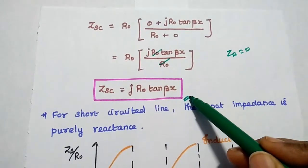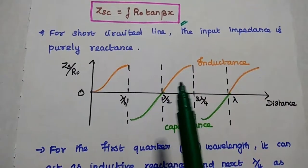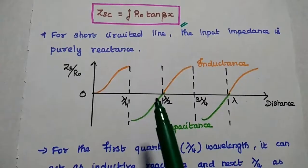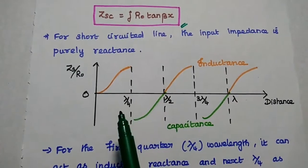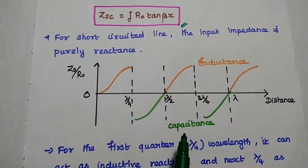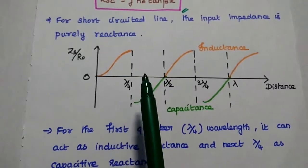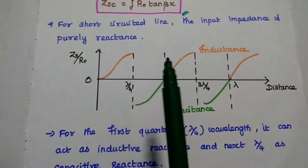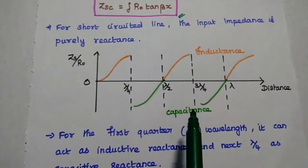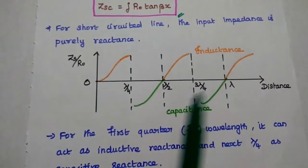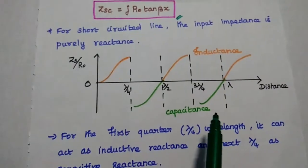This is a purely imaginary value, so it represents only reactance. For the short circuited line, the input impedance is purely reactive. Reactance means it can be either inductive reactance or capacitive reactance, based on the wavelength. For the first quarter wavelength, the input impedance acts as an inductive reactance. For the next quarter wavelength, it can be capacitive reactance. For the next one, it can be inductive again. So there are alternating values of capacitive and inductive reactance based on quarter wavelength.